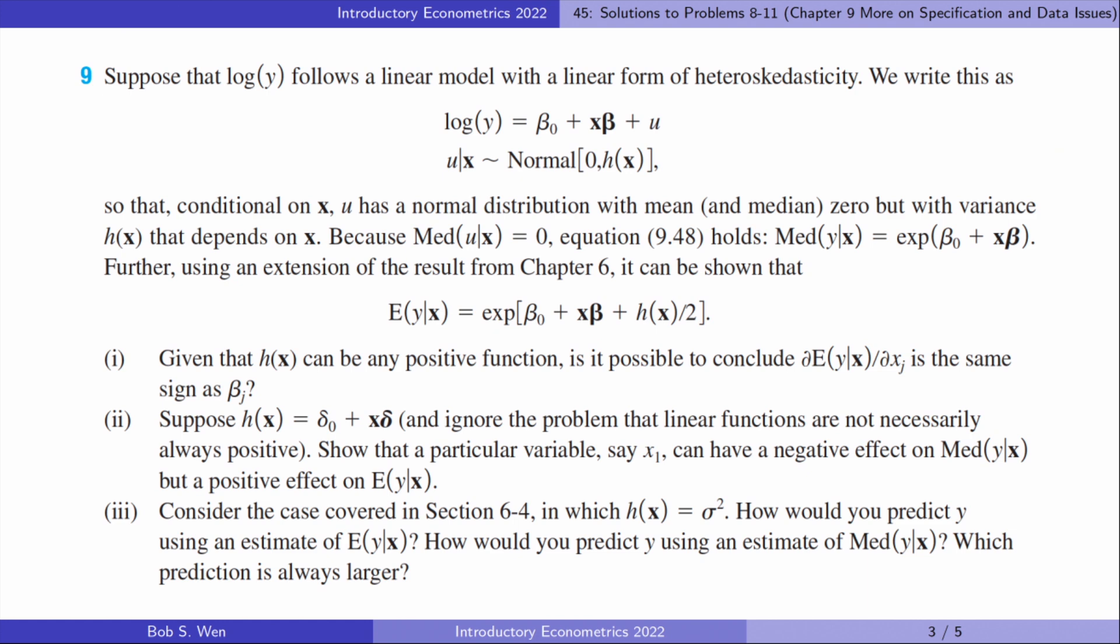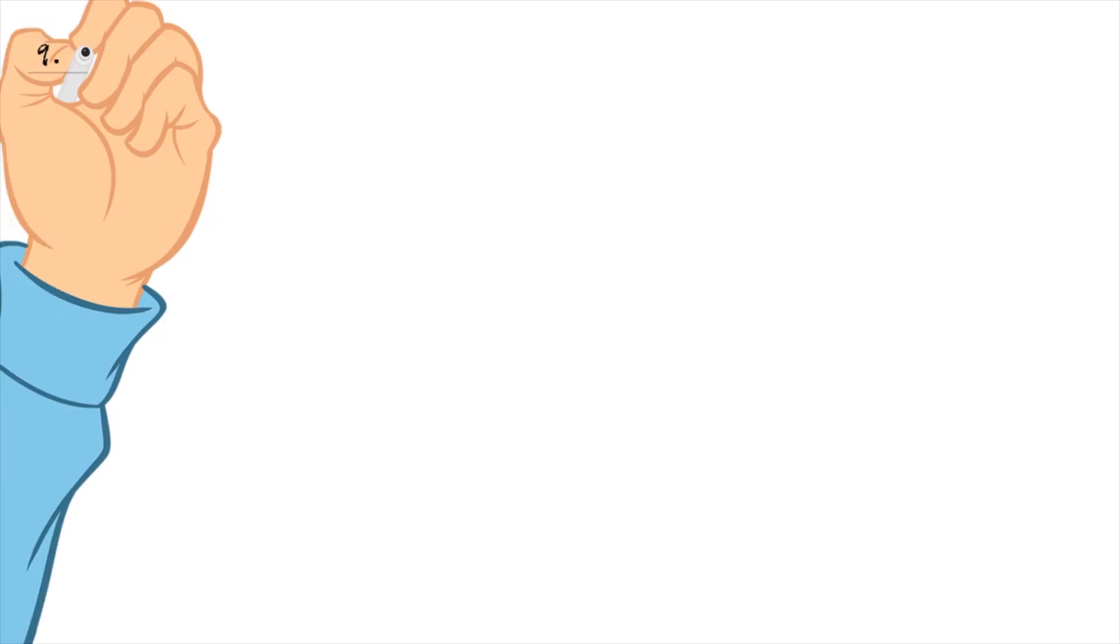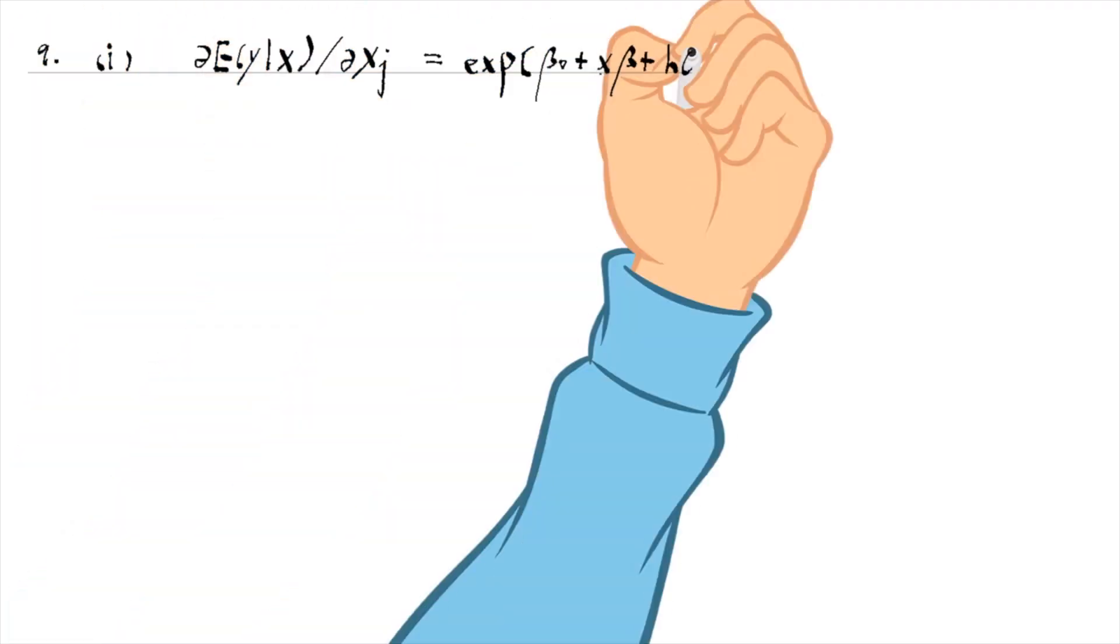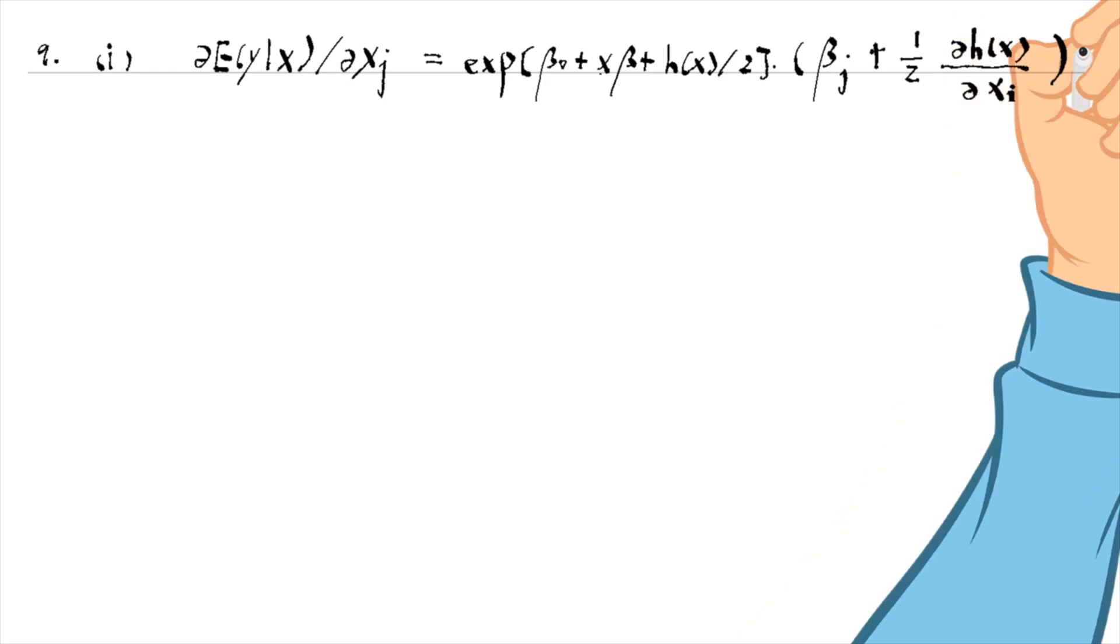Let's do problem 9. The sign of the partial effect is the same as the sign of the second term, which is not necessarily the same as beta j.